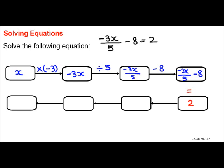Now, opposite of negative 8 is addition of 8. So, 2 plus 8 gives me 10. Negative 3x over 5 equals 10.